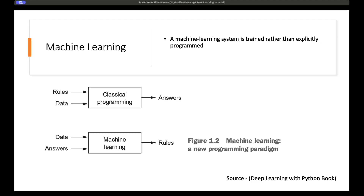So what is machine learning? Unlike classical programming, where you have rules and data and some computation that happens to produce outcomes, with machine learning it works the other way around. Machine learning models are trained rather than explicitly programmed. A machine learning model leverages a huge dataset and expected outcomes — the answers — and what you are trying to do is have the model, through algorithms, predict the rules from which the answers came.